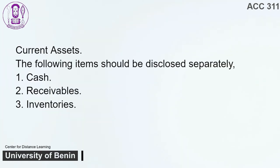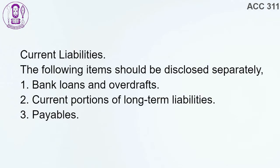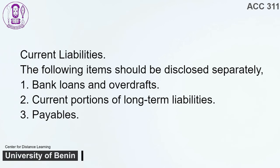Current Liabilities. The following items should be disclosed separately: 1. Bank loans and overdrafts. 2. Current portions of long-term liabilities. 3. Payables.